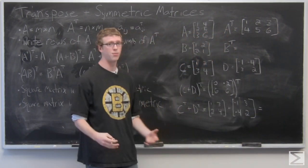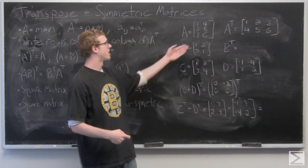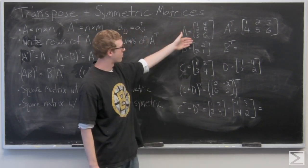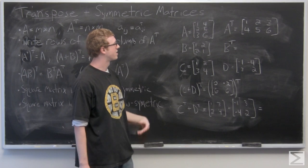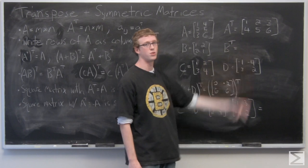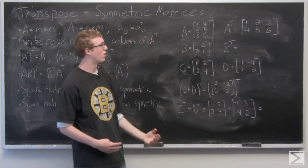So essentially the most important thing to take a look at here is where say the 3 and the 4 end up. So you have the third entry in the first column. That's row 3, column 1 is going to go to column 3, row 1.